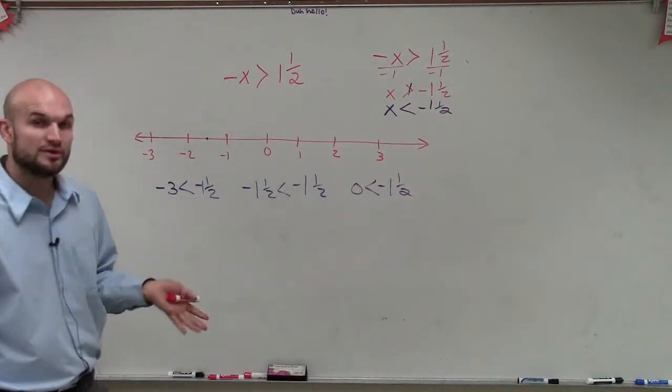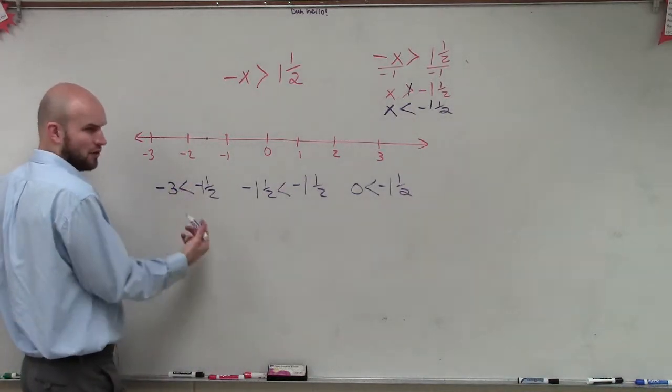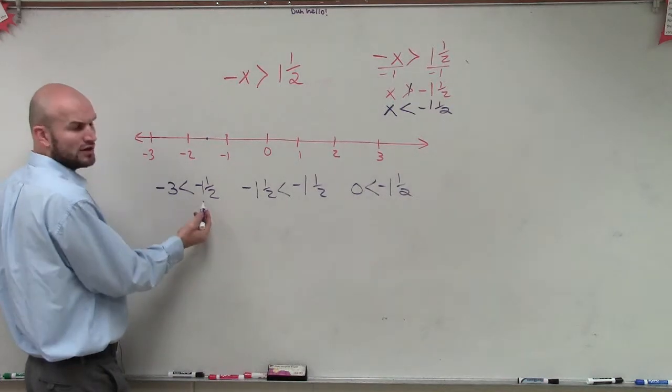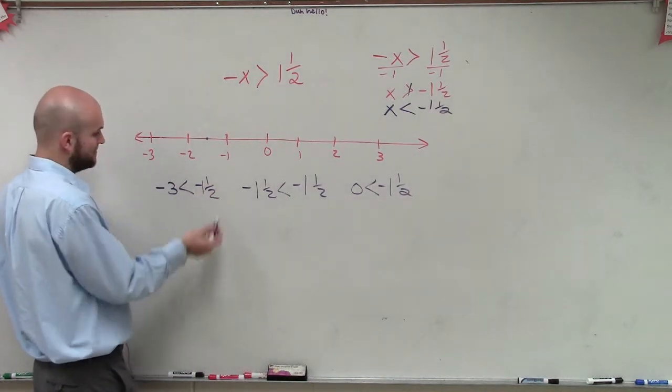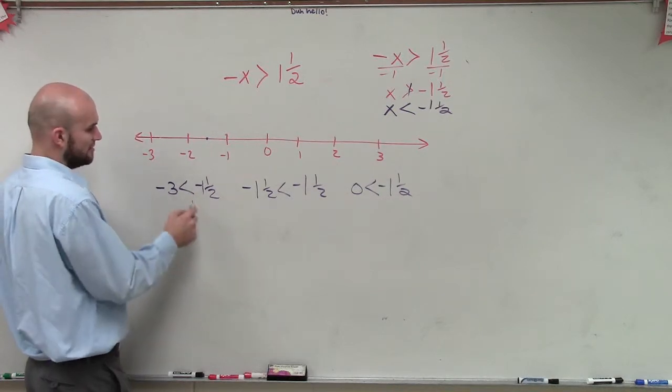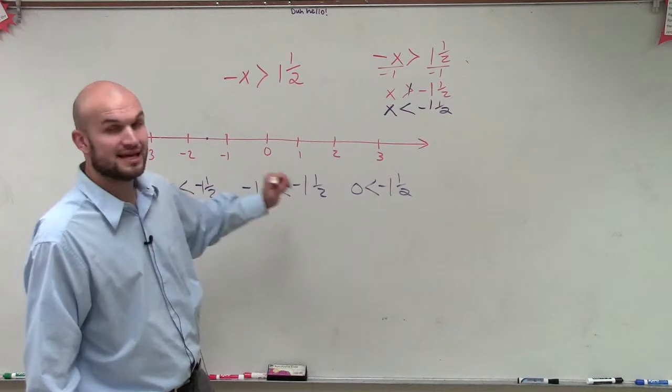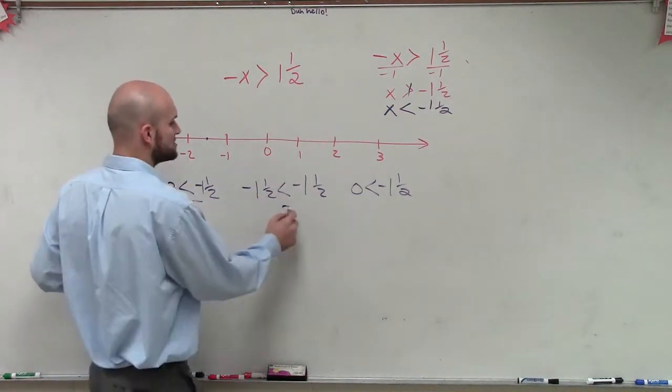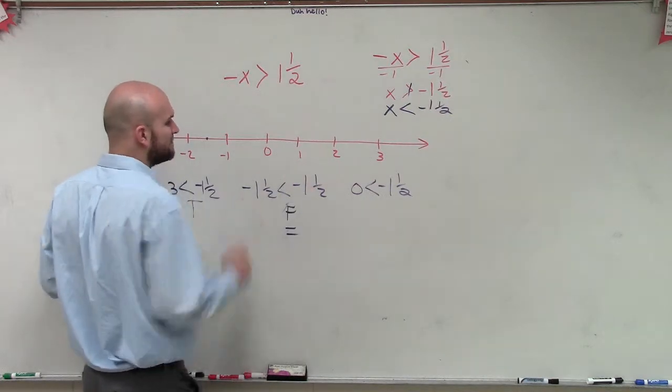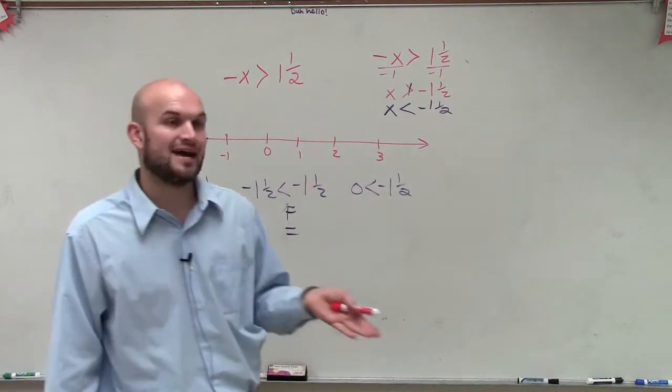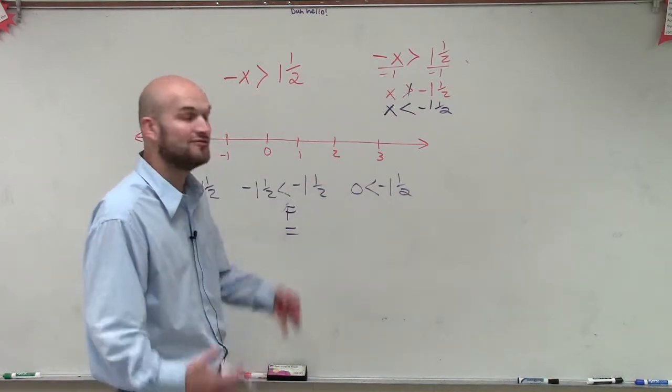We determine what is true and what is false. Is negative 3 less than negative 1 and 1 half? Of course. If you owe somebody $3, that's owing them a lot less than owing them $1.50. So that is true. Is negative 1 and 1 half less than negative 1 and 1 half? No, that's false because those two are equal to each other. And if you don't owe anybody any money, is that having less money than owing somebody negative 1 and 1 half? No, so that is false.